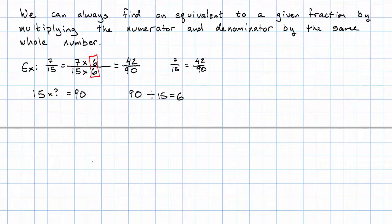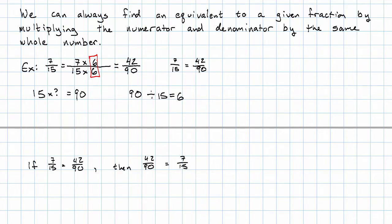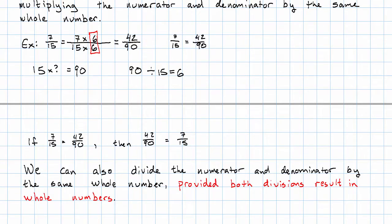It's important to remember that equal signs work both ways. If seven-fifteenths is equivalent to forty-two ninetieths, then it's also the case that forty-two ninetieths is equivalent to seven-fifteenths. But we can't get from forty-two ninetieths to seven-fifteenths by multiplying, because when we multiply by a whole number, the result is not smaller. Since equal signs work both ways, in addition to multiplying by the same whole number, we could also divide by the same whole number — provided both divisions result in whole numbers.